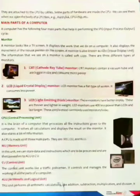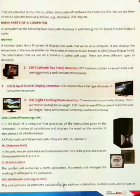A computer has the following four main parts that help in performing the IPO cycle. The first part is the monitor. A monitor looks like a television screen. It displays the work that we do on a computer. It also displays the movement of the mouse pointer on the screen. A monitor is also known as VDU, i.e. virtual display unit.